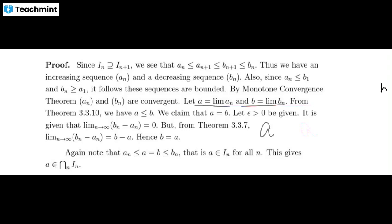From the inequality aₙ ≤ bₙ, since convergence preserves order, we have a ≤ b. However, we will show that a = b, and this common value will be in the intersection.